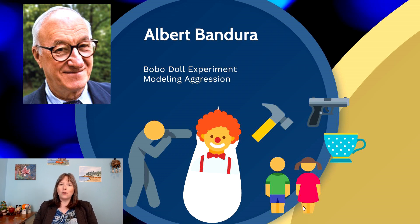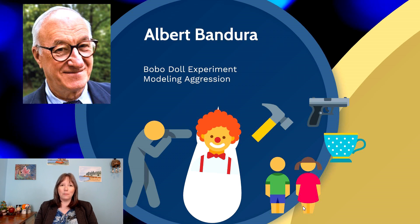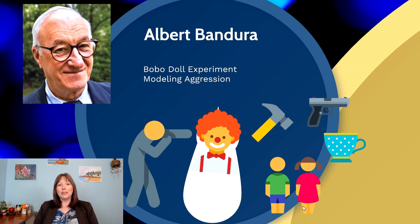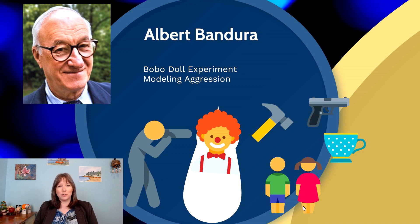If the adult was really aggressive and punched the clown, when they left, the child would go up and punch the clown. If the adult hit the inflatable clown with a hammer, the child would pick up the hammer and hit the clown. If the adult pointed a gun and said 'bang' at the clown, the child would do the same. The hammer and gun were always in the room, but the child would only pick them up if the adult had. Conversely, if the adult was non-aggressive and offered the clown tea, the child would offer the clown tea.